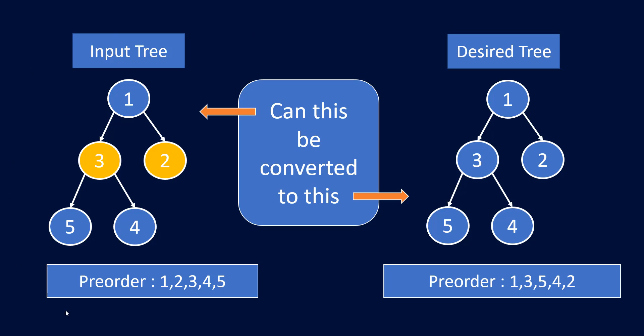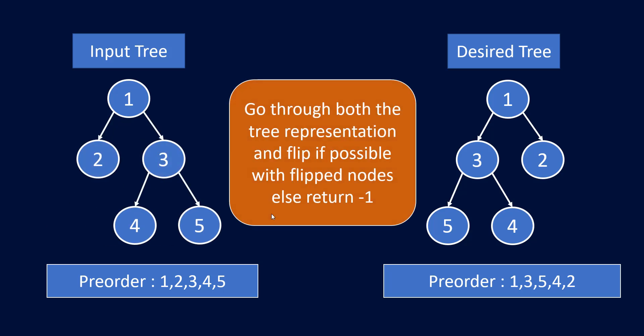If both the trees are equal, that is you need not flip any nodes, then your answer would be an empty list. These were the examples also shown in the problem statement. For this video we'll use this input and the pre-order and try to see how we can get our result.